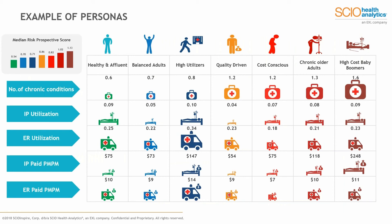Thanks, John. To follow up on the previous slide, this particular slide is an example of the personas and some of the metrics that we actually calculate for each persona type during our back-end analysis. This slide represents seven personas, but depending on the data set and therapeutic area we're analyzing, we may have fewer or more — for example, four or five, or nine or ten. Rare diseases might have fewer personas; other disease areas might have more.